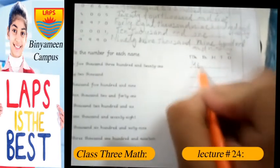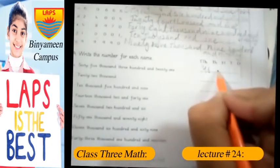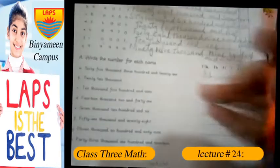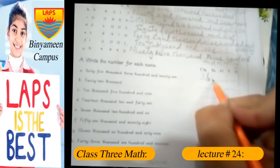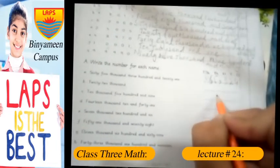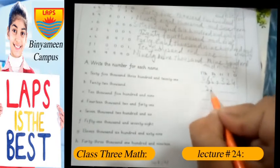46,000... sorry, 65,000. My bad, the number is actually 65,324 for the next one.